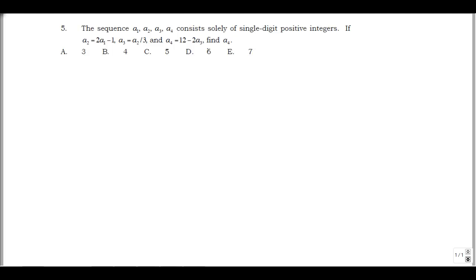So what I'm going to do, I'm going to focus on this first recurrence, this A2 is 2A1 minus 1. Now if I think about that, I take whatever A1 is, 2A1 is even, and then I subtract 1, that tells me A2 is odd.